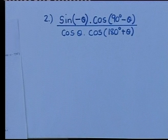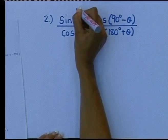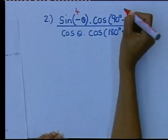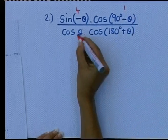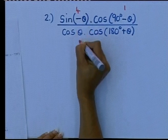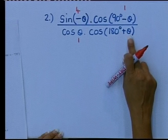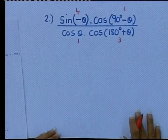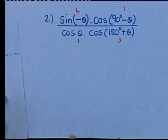I'm going to start by locating the quadrants. Negative theta is in the fourth quadrant. 90 degrees minus theta is in the first quadrant. Cos of theta — it is just theta, so that is in the first quadrant. And then 180 plus theta is in the third quadrant. Now we are going to look at: does the name change, and how do we do the sum?